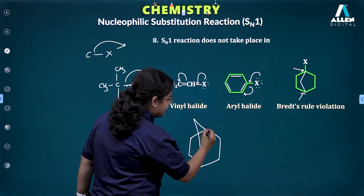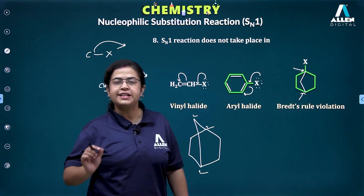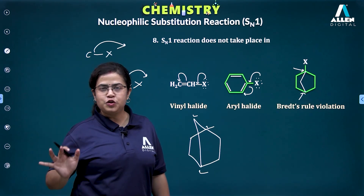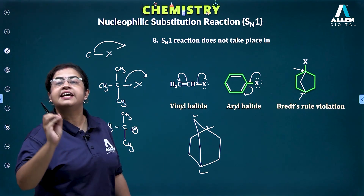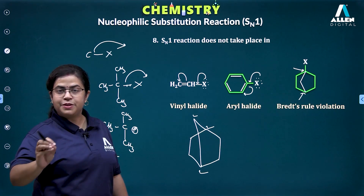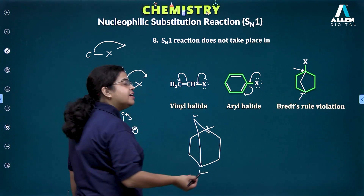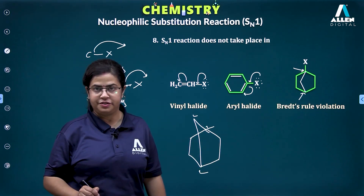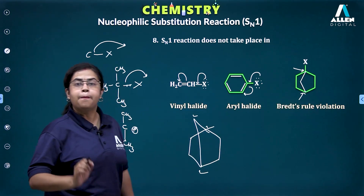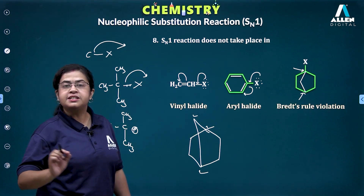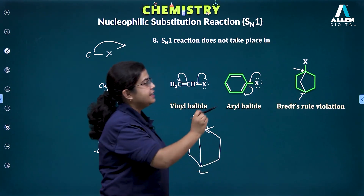The bridgehead positions are non-planar. A carbocation, which is essentially sp2 hybridized and therefore planar, cannot form at a non-planar position. Hence, according to Bredt's rule, a carbocation cannot be formed at the bridgehead carbon, and we cannot violate Bredt's rule. Therefore, halides at the bridgehead position cannot undergo an SN1 reaction.